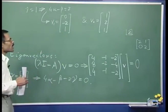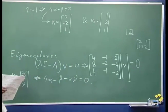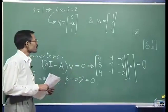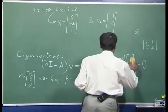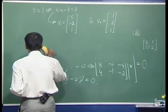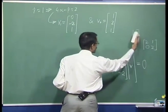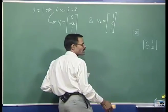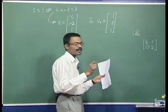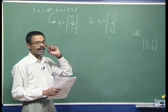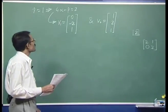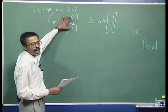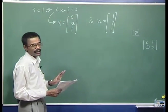In order to get the Jordan blocks, we will need to find a generalized eigenvector apart from these two eigenvectors. This is what we expect the Jordan blocks to look like. We will actually find this after we get the complete basis — that is, after we find out the generalized eigenvector also.